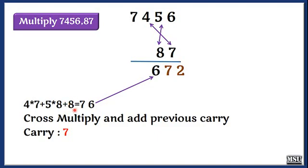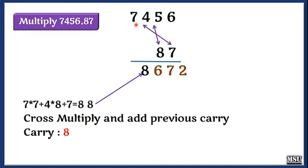We are going to leave 5, once again a cross multiplication. 7 into 7 and 4 into 8 plus this 7, so we are going to get the result as 88. 8 is carry and 8 is here.